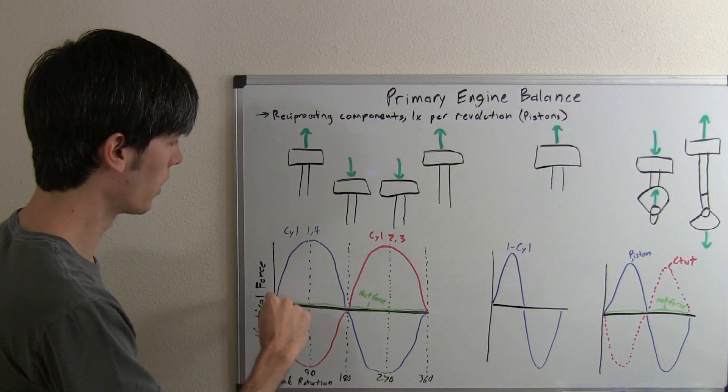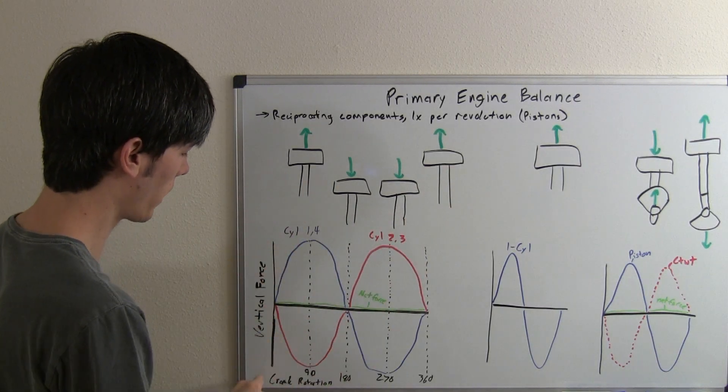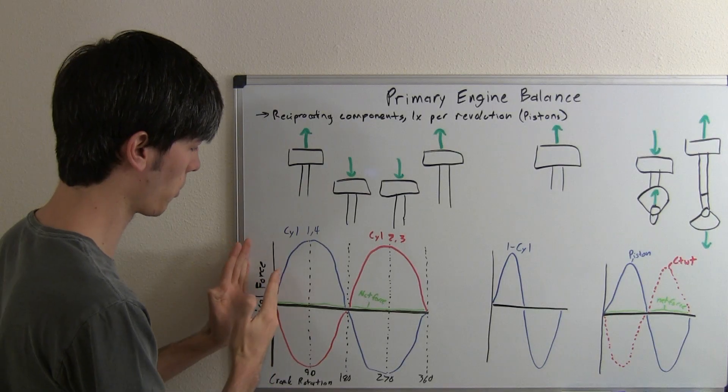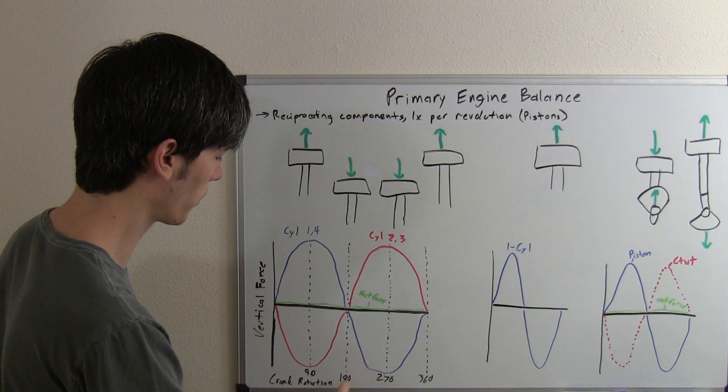What does this look like? Cylinders one and four - if you look at that, here we've got a graph of the force, vertical force, versus the crank rotation.